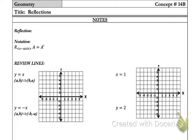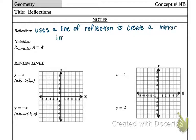So in geometry, we define reflection as when it uses a line of reflection to mirror an image. So again, it uses a line of reflection to create a mirror image.